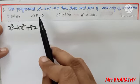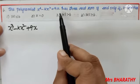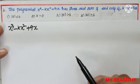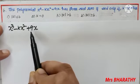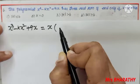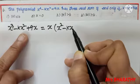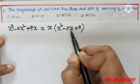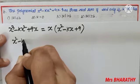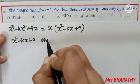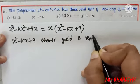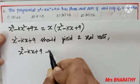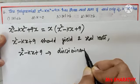Question number 6: the polynomial x³ - kx² + 9x has 3 real zeros if and only if k satisfies one of four conditions. We can factor out x, leaving x(x² - kx + 9). The factor x gives one root of zero, so x² - kx + 9 must yield two real roots. For two real roots, the discriminant must be greater than or equal to 0.